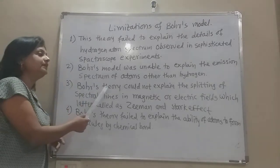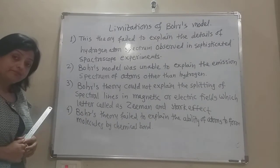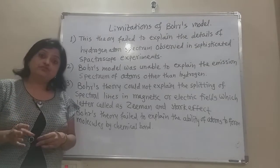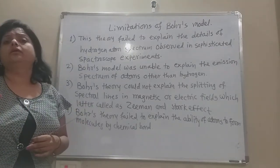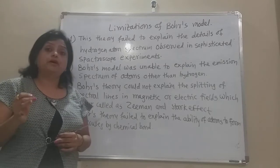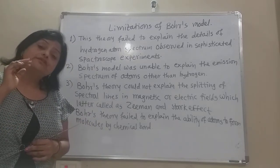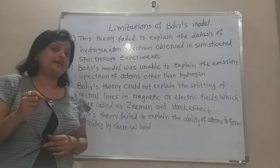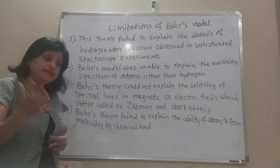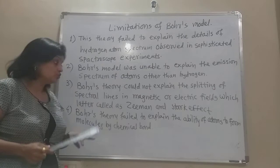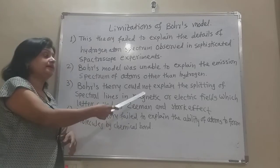The third limitation is that Bohr's theory could not explain the splitting of spectral lines in a magnetic or electric field. The spectral lines — such as Brackett, Lyman, Paschen, and other series — appear as bands, but in sophisticated instruments they are seen as finer split lines. This splitting, which appears in magnetic and electric fields, could not be explained by Bohr's theory. These effects are known as the Zeeman effect in magnetic fields and the Stark effect in electric fields.